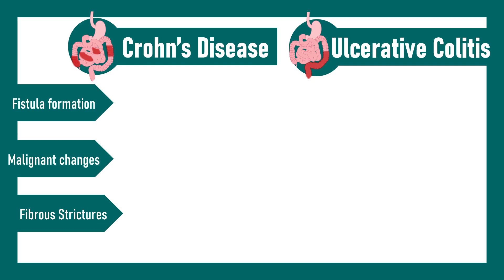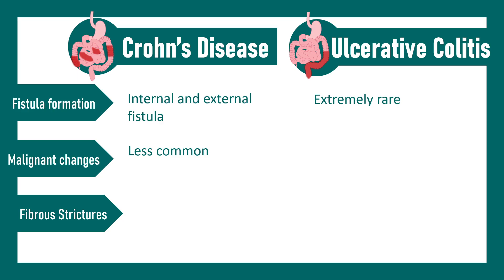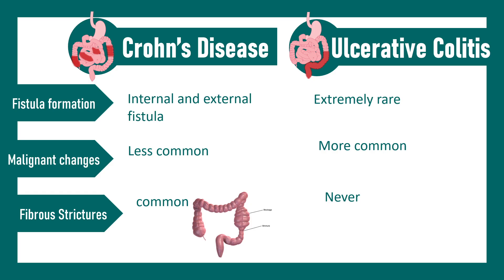A few more important aspects: fistula formation can be internal or external in Crohn's disease and is extremely rare in ulcerative colitis. Malignant cases are very uncommon in Crohn's disease, whereas prolonged ulcerative colitis can eventually lead to colorectal cancers. Fibrous stricture is more common in Crohn's disease and can lead to bowel obstruction, whereas it never forms in ulcerative colitis.